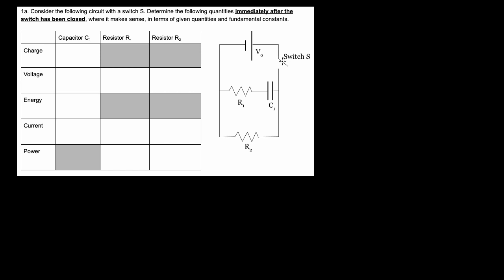Before we close this switch, nothing interesting is going on — the circuit's broken, no current's flowing, and we'll assume this capacitor starts off uncharged, so there's no energy here at all. Right when we close the switch, current starts to flow out of the battery and it's going to branch off two ways. You might think it can't take the path through the capacitor, but it does — it has no problem initially taking that path.